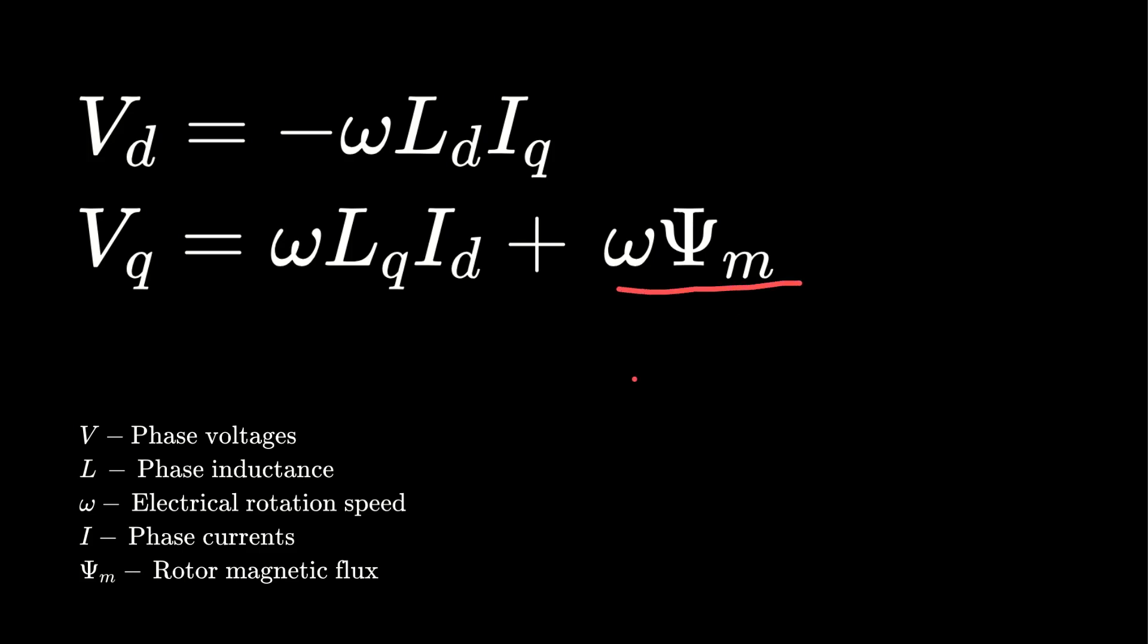This part here represents the back EMF, and we can clearly see that adding a negative current in the D axis will counteract it, whereas a positive current will only increase the required voltage. So is there a limit to field weakening?